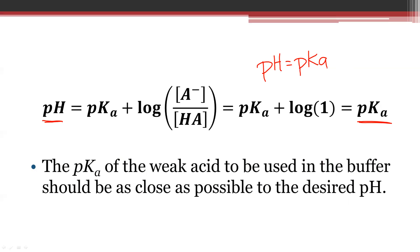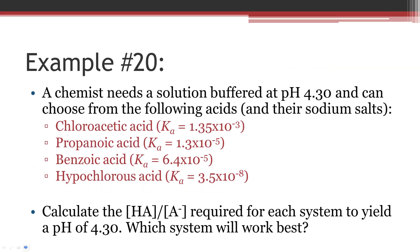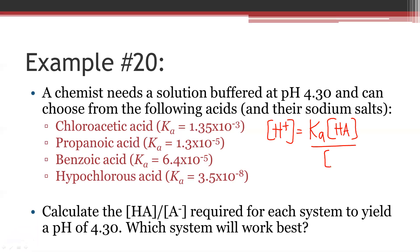Example 20 gives us a list of acids that could be used to make a buffered solution with a pH of 4.30. We want to calculate the ratio of acid over base required for the system that would yield a pH of 4.30 and pick the acid whose ratio is closest to one — meaning the pKa is closest to the desired pH. The equation we use comes from page 6 of section 8.8: [H⁺] = Ka × ([HA]/[A⁻]).